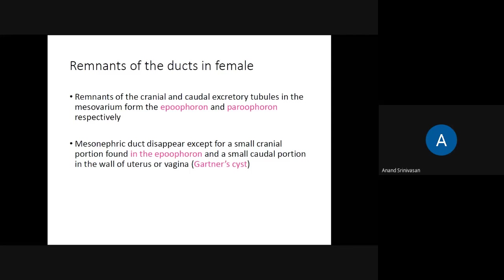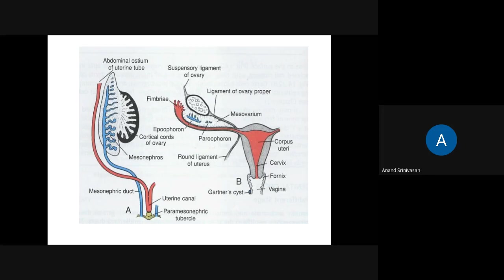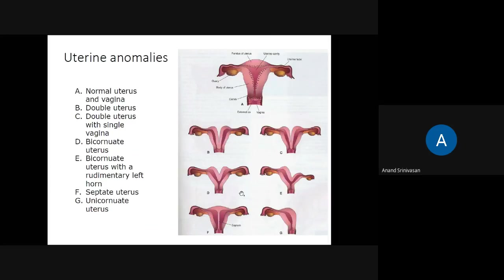The small caudal portion of the mesonephric duct may develop into a cyst called Gartner's cyst. In this picture you can see the epoophoron, paroophoron, and Gartner's cyst — these are the remnants of the mesonephric ductules and duct. Gartner's cyst is located near the junction between the upper one-third and the lower two-thirds of the vagina.